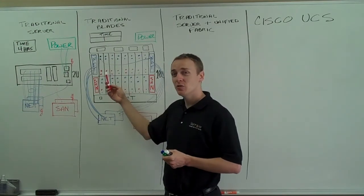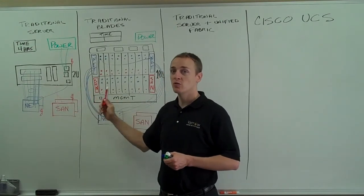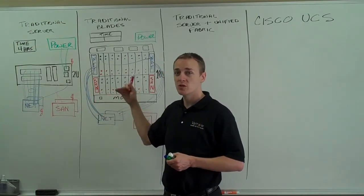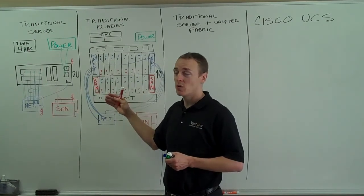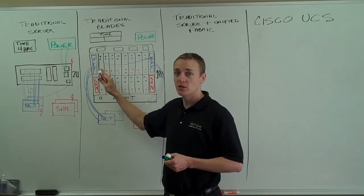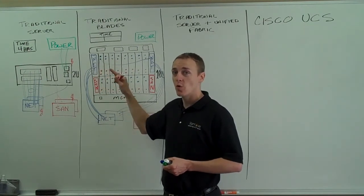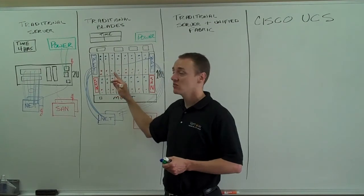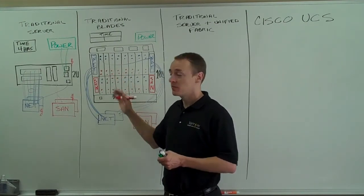We're going to have to do some different things to get all the needs of my service console, vMotion, fault tolerance, and my virtual machine network. I'm going to have less bandwidth in this default configuration. I could go to a more advanced configuration, or in newer chassis go to 10 gig — but it's somewhat complex to do that in a chassis environment.